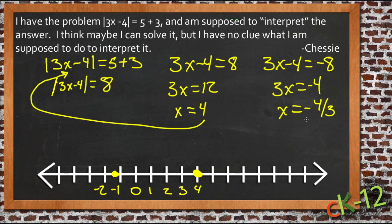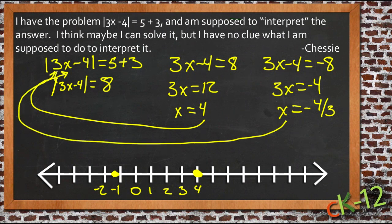Or, x could be negative 4 thirds. If we put negative 4 thirds in up here, 3 times negative 4 thirds is negative 4. Negative 4 minus 4 is negative 8, and the absolute value of negative 8 is 8, which is equal to 5 plus 3.